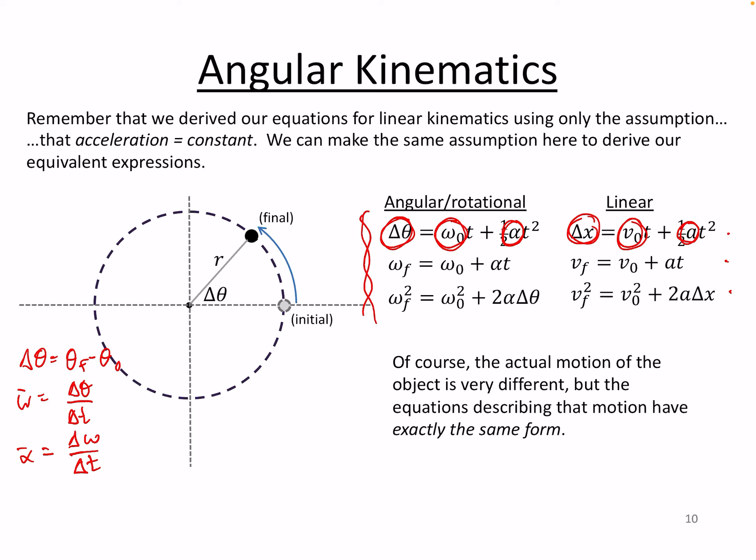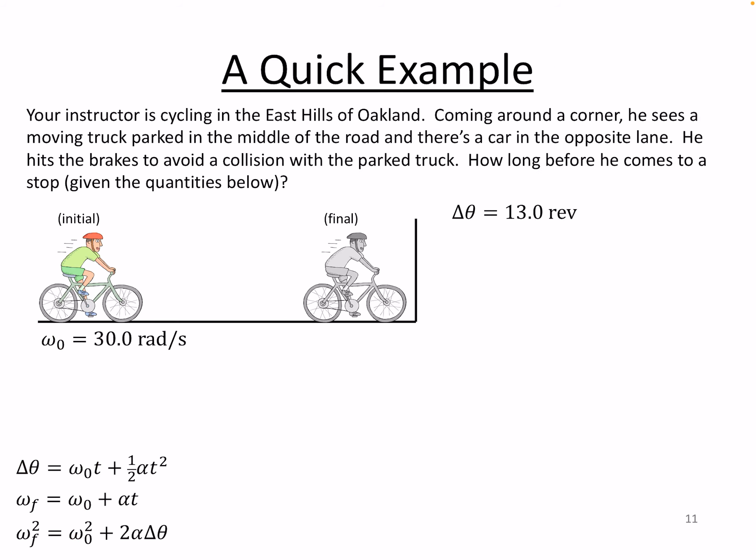Let's look at a quick example. So here's an example that I acted out years ago now, but I'm cycling in the East Hills of Oakland, I come around a corner, I see a moving truck parked in the middle of the road, and there's a car in the opposite lane, so I just have to come to a halt really quick. And we want to know how long before I come to a stop.